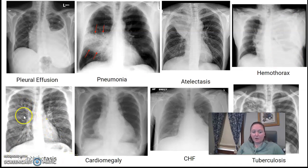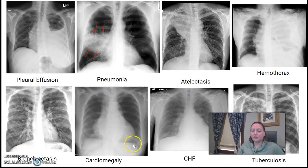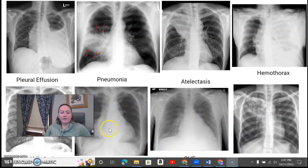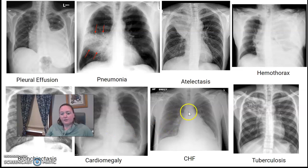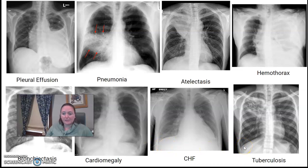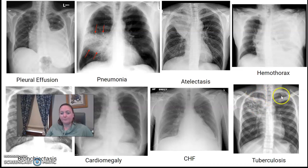With bronchiectasis, you can see the bronchioles have thickened and are more dense. Cardiomegaly — if you look at the size of the heart in this chest, the mediastinum is very wide, coming way out to the side — so enlarged heart. With CHF, there's a failure to pump. The heart is going to look enlarged and we're going to see some fluid collection. The costophrenic angles are starting to be rounded — they're not nice pointy triangles like they're supposed to be. And tuberculosis is going to involve some growths up in the upper area of the lung, which is why we do that lordotic chest view, looking at the apices.